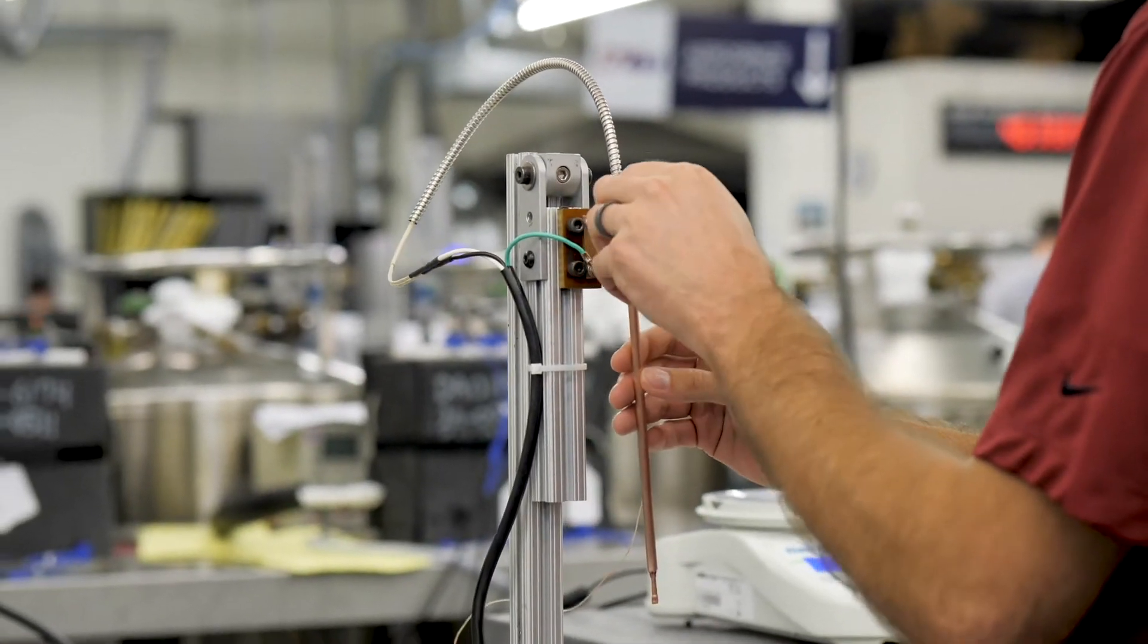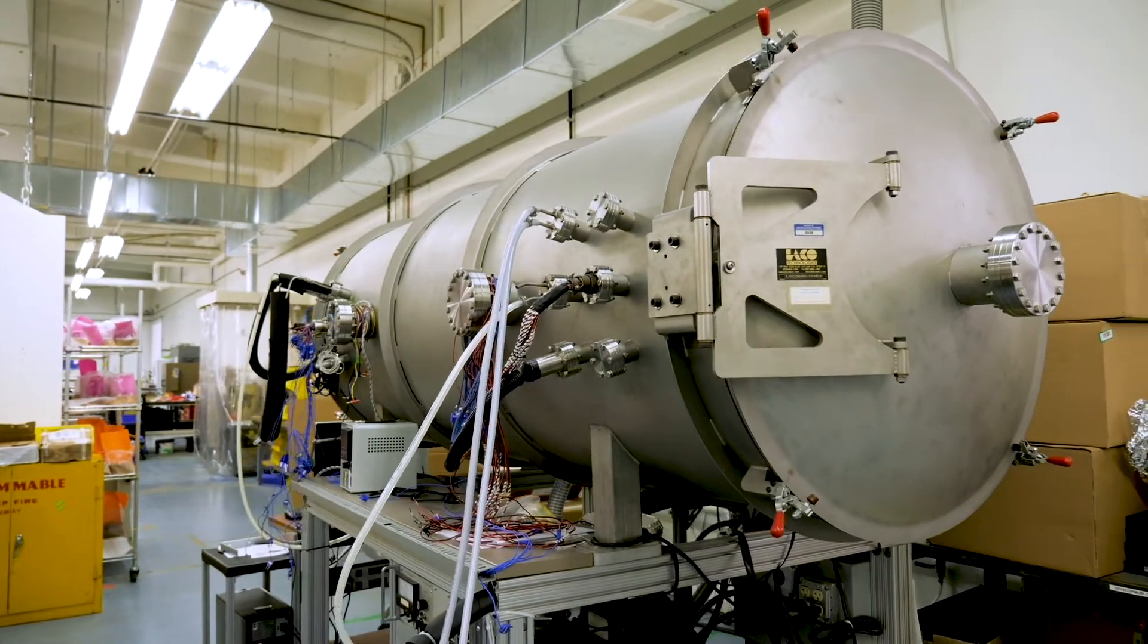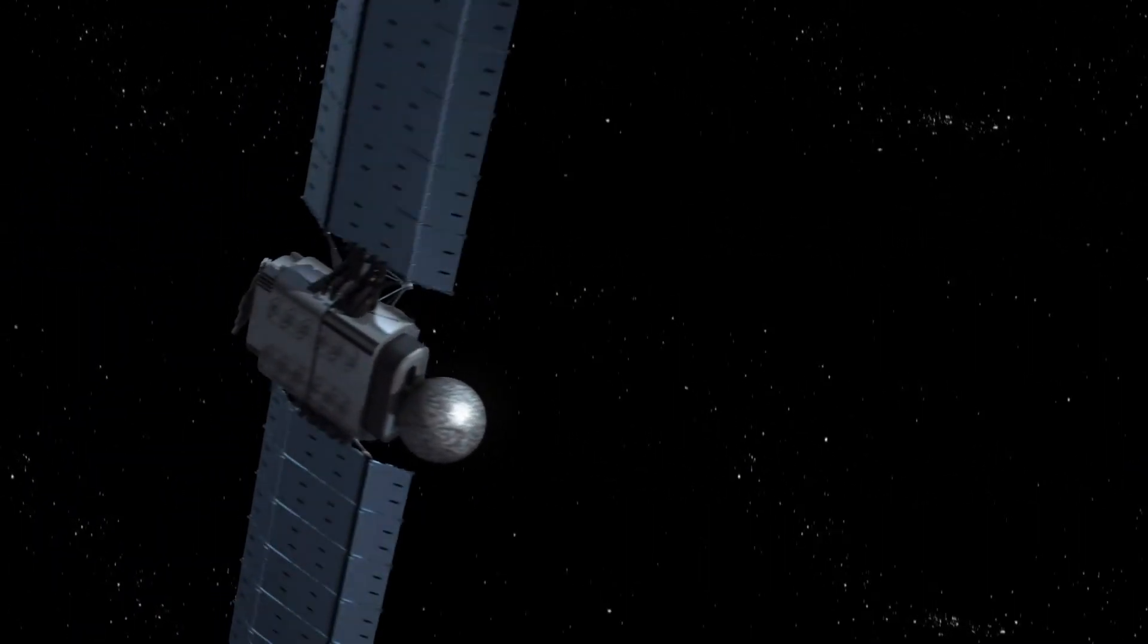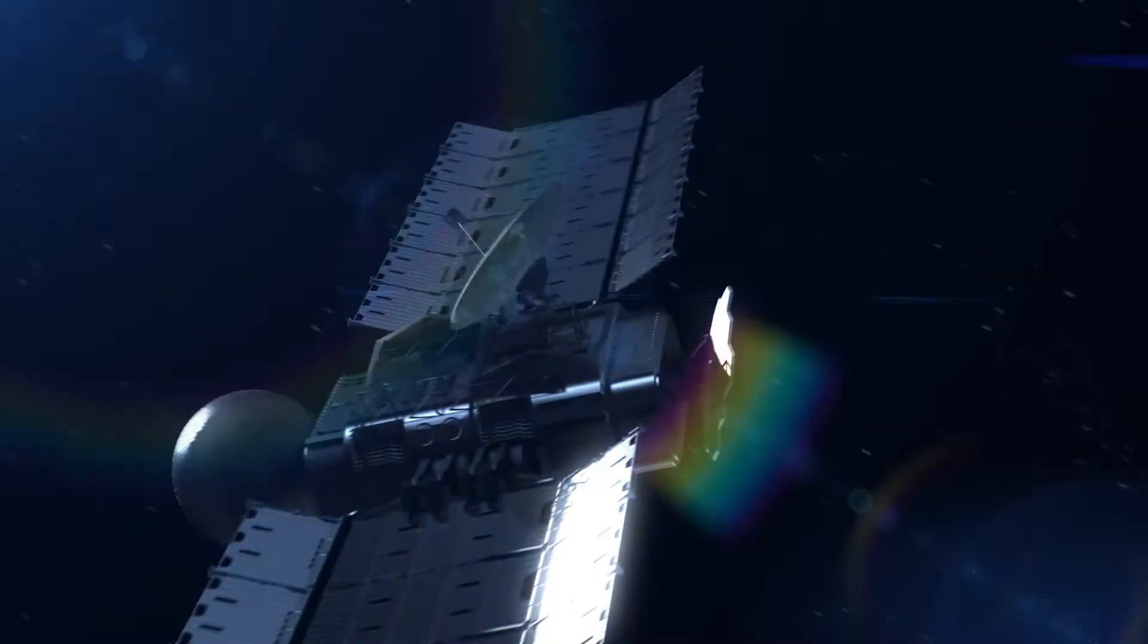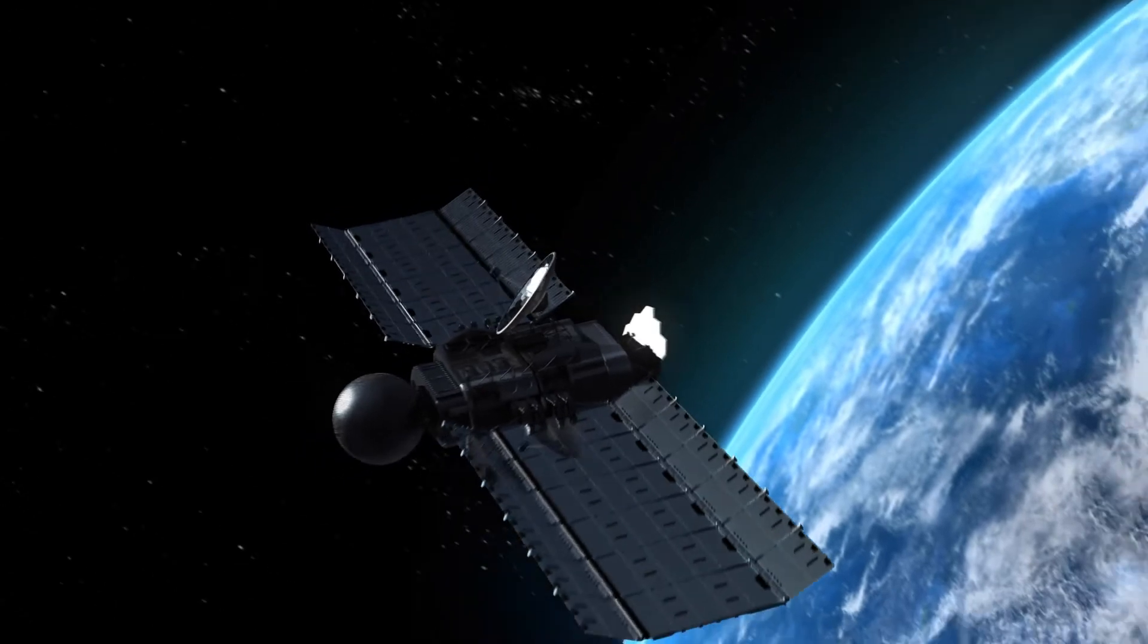Some of the challenges in the space environment are the wide temperature extremes that the heat pipes will see. Water freezes at zero C and it expands about 10% when it does. So we need to accommodate that expansion without seeing any damage to the heat pipe itself.